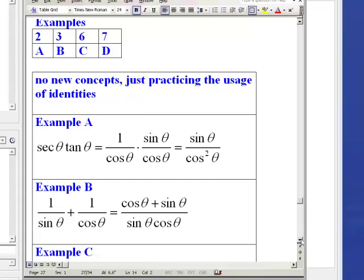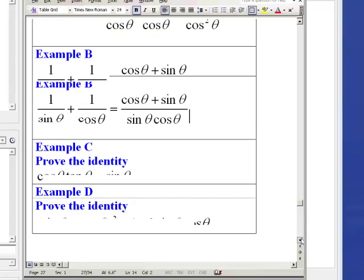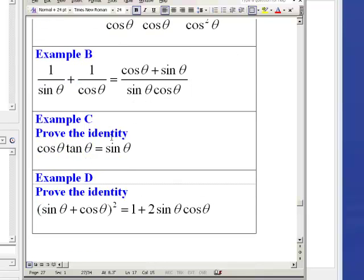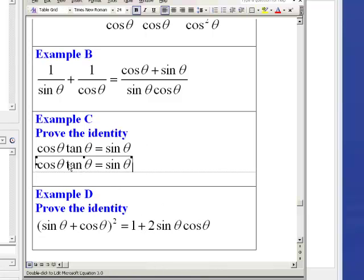I just said add the two fractions. And the next example, it says prove the identity cosine theta times tangent theta equals sine theta. What are we going to do with this? Let me write it here so I can manipulate it.